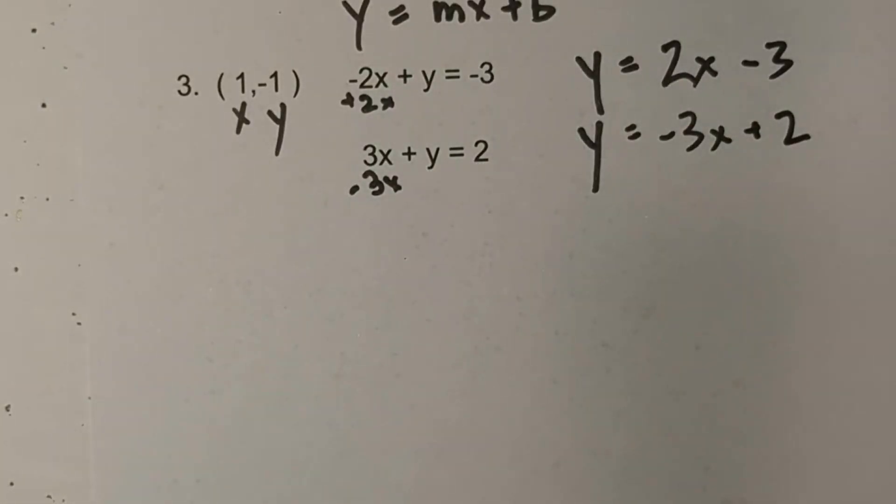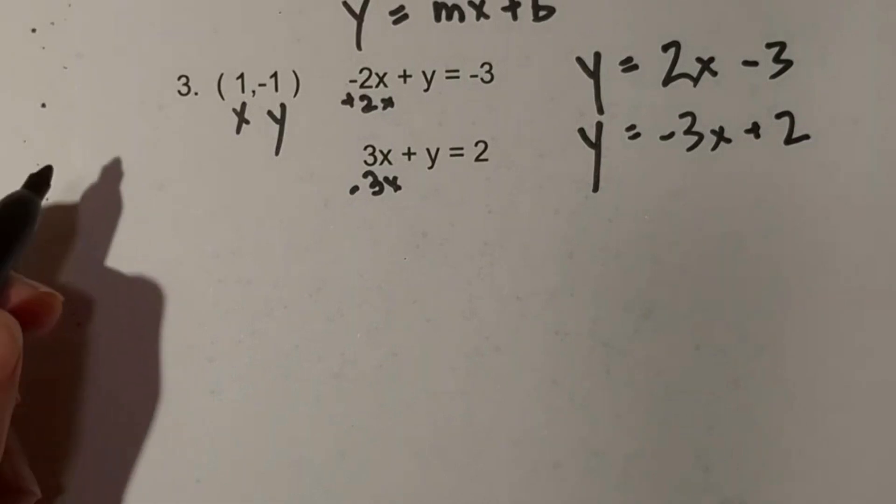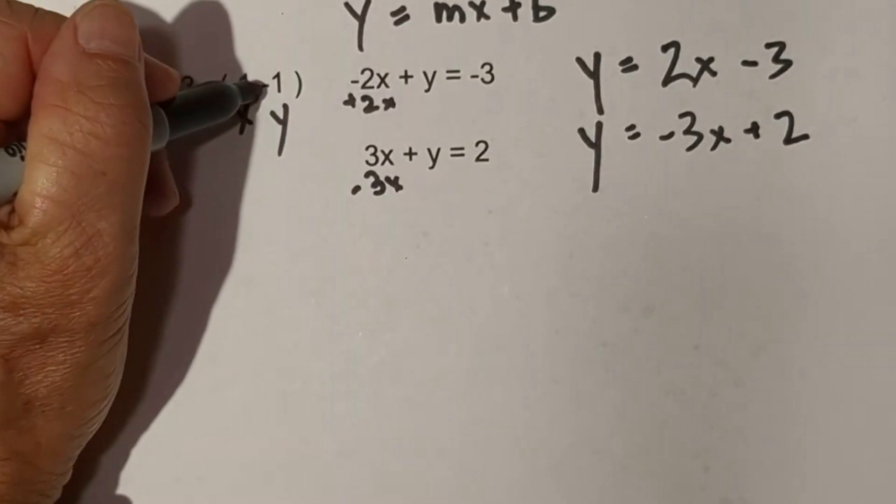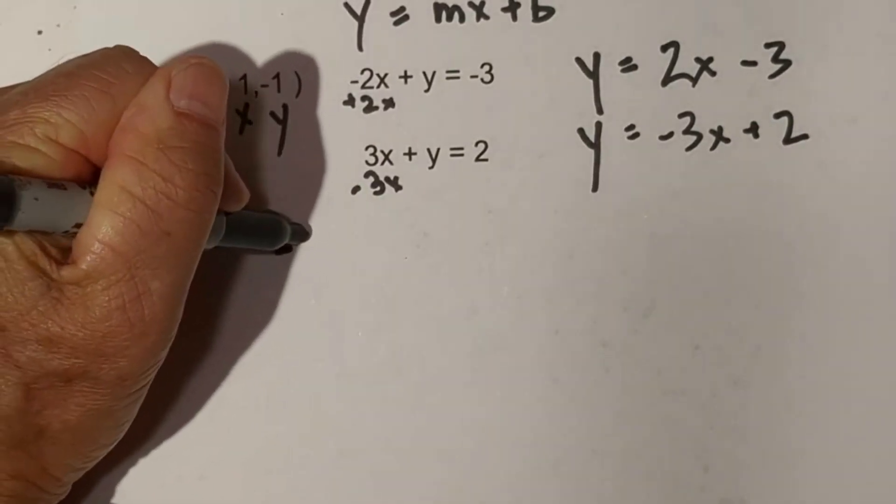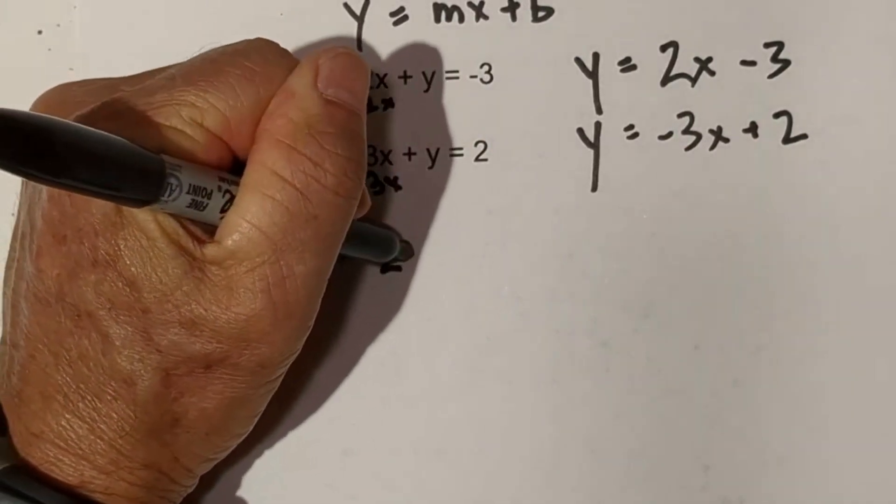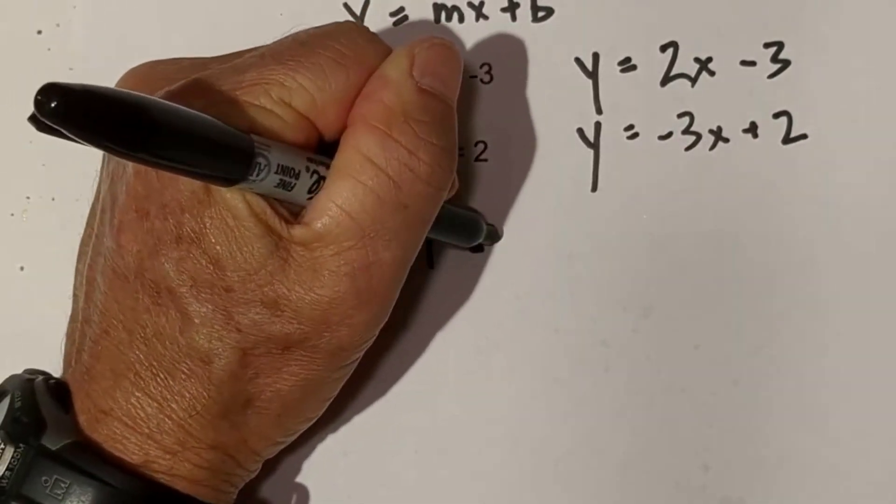Now let's plug in the ordered pairs. So I'm going to rewrite this. We have the x, let me start with the y. We have -1 equals 2 times 1 minus 3.